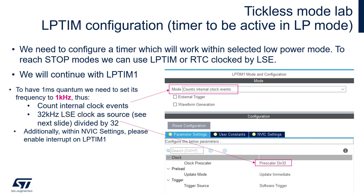Within STM32CubeIDE or STM32CubeMX, please go to Timers, LPTIM1 section. Within this section, please select LPTIM mode to count internal clock events. Then within parameter settings, please select clock pre-scaler to pre-scaler divided by 32. We need to enable the interrupt for low-power timer 1 within NVIC settings. The rest of the settings we will keep in default state.